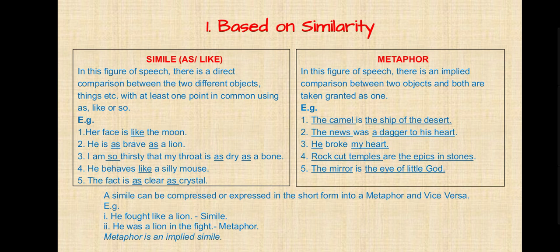Examples of simile: first, 'Her face is like the moon.' Second, 'He is as brave as a lion.' Third, 'I am so thirsty that my throat is as dry as a bone.' Fourth, 'He behaves like a silly mouse.' Fifth, 'The fact is as clear as crystal.' In the first sentence, face is compared with moon; in the second, bravery of a lion is compared with him; in the third, thirstiness is compared with a dry bone; in the fourth, behavior is compared with a mouse; and in the fifth, fact is compared with crystal.